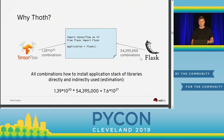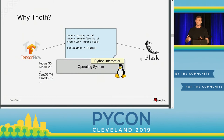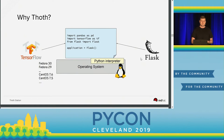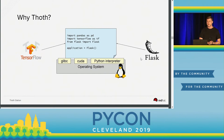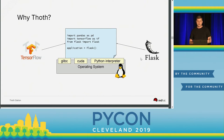Our application runs in some operating system, which provides an environment for running our applications. It provides a Python interpreter that can be in different versions, and there can be different versions of the operating system — for example, Fedora 30, Fedora 29, CentOS, and so on. The operating system also provides native dependencies, such as glibc. And if you are familiar with the Python wheel package format, you know there is a manylinux standard that tries to provide requirements for the OS to run Python applications. But it cannot handle all these dependencies — for example, if you run TensorFlow with GPU, there is a CUDA library not in the manylinux standard, and CUDA has different versions as well.